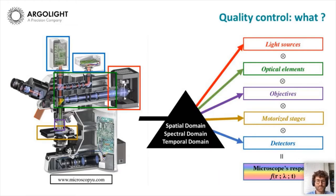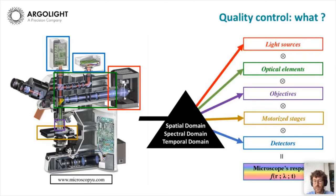All those elements vary spatially in X, Y, and Z, they also vary spectrally depending on wavelength, and they can vary over time. All of those elements contribute to what we call the microscope response, which depends on X, Y, Z, wavelength, and time. This shows that it's obvious we should perform quality control, but it's also kind of obvious that it's more complicated than it appears at first sight — and this is just for a widefield microscope.